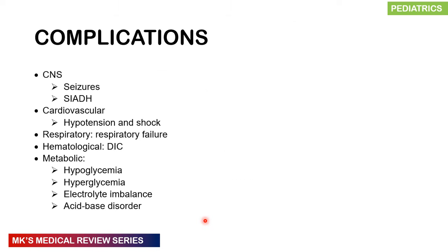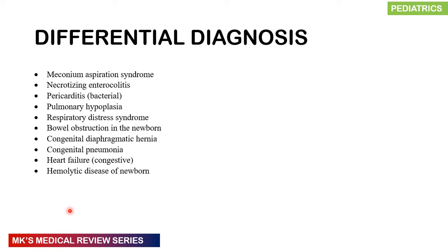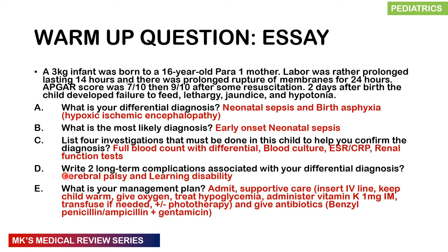Complications include CNS complications such as seizures and SIADH; cardiovascular complications like hypotension and shock; respiratory failure; hematological complications like disseminated intravascular coagulation (DIC); and metabolic complications including hypoglycemia, hyperglycemia, electrolyte imbalance, and acid-base disorders. The differential diagnosis includes meconium aspiration syndrome, necrotizing enterocolitis, pericarditis, pulmonary hypoplasia, respiratory distress syndrome, bowel obstruction, congenital diaphragmatic hernia, congenital pneumonia, congestive heart failure, and hemolytic disease of the newborn.